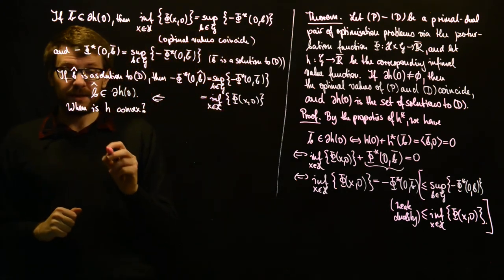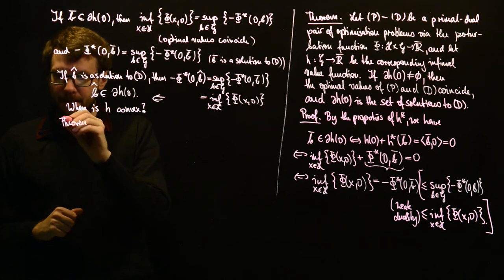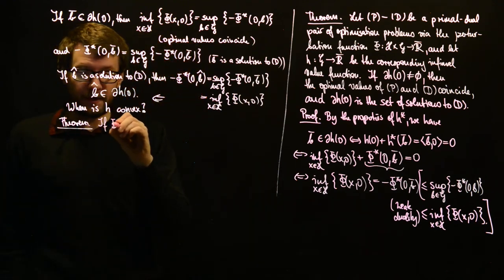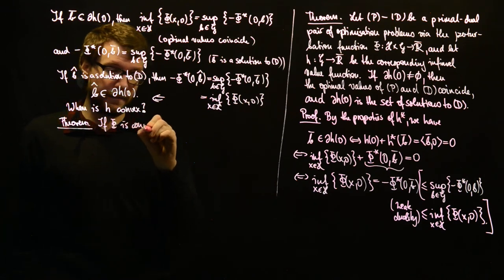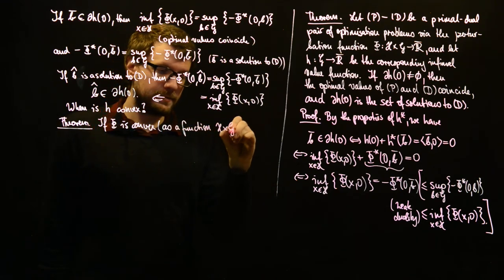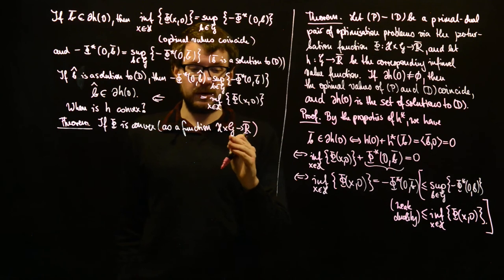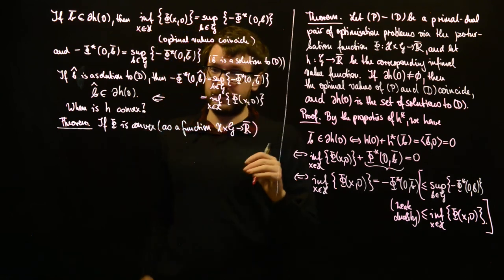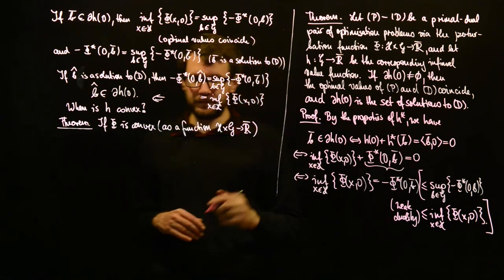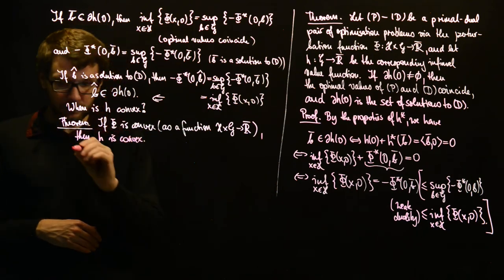Theorem: if phi is convex as a function from H times G to R-bar — meaning convexity not in each variable separately, but jointly in both variables simultaneously — then h is convex. Let's prove this.